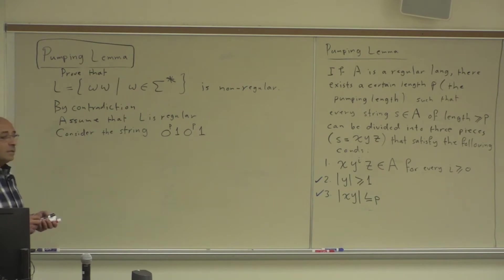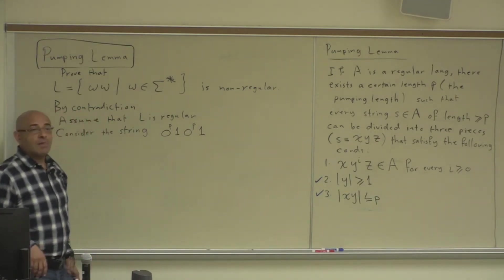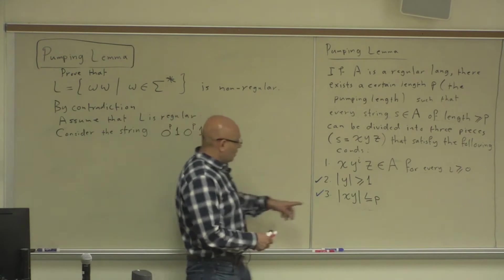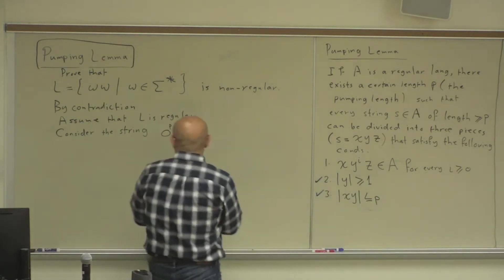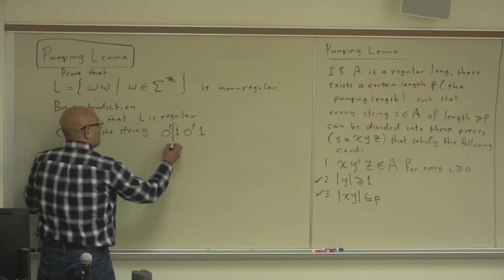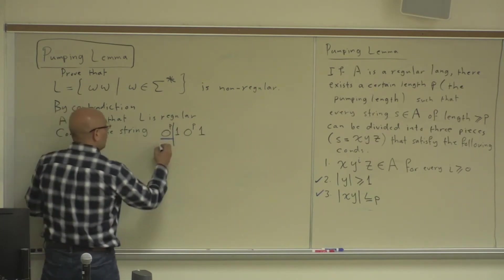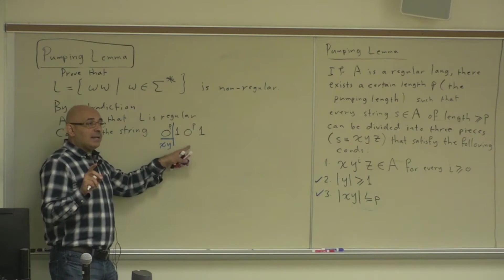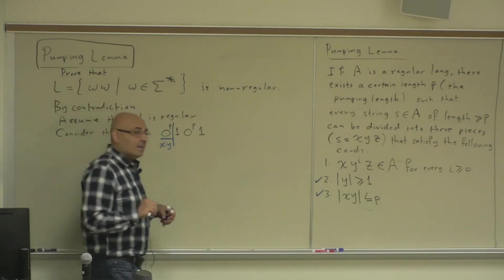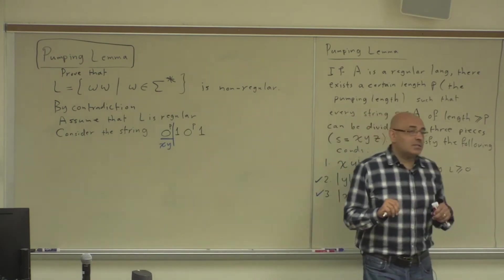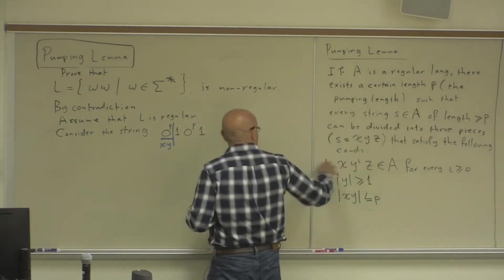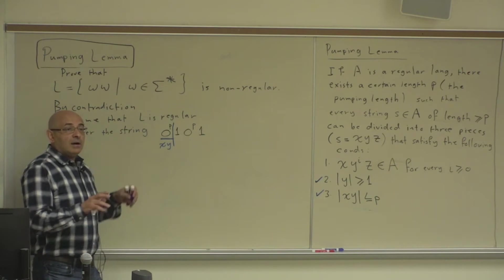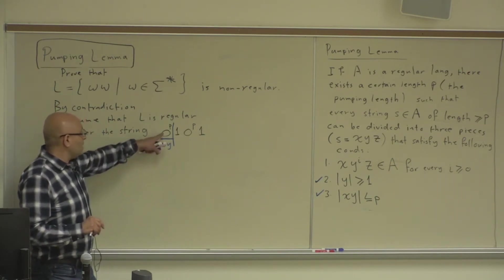What will happen if I pump this? Where should Y be? XY must be less than or equal to P, so Y must be within the first block. I always select sufficiently long strings — the strings I use to show that a language does not satisfy this necessary condition of regularity are always greater than P. So Y must appear here, in the first block of zeros.